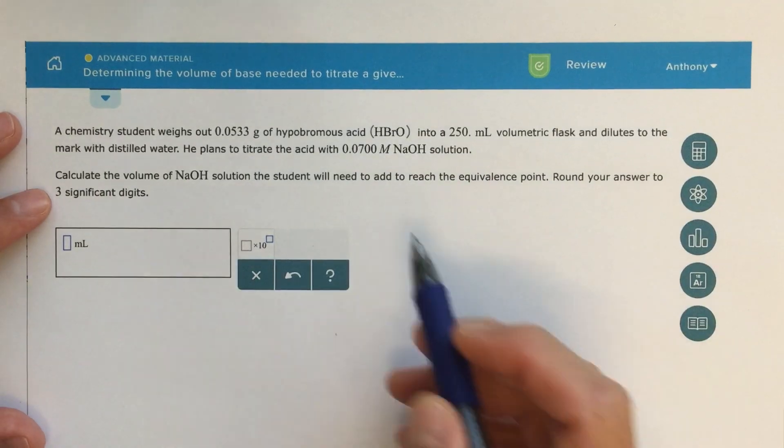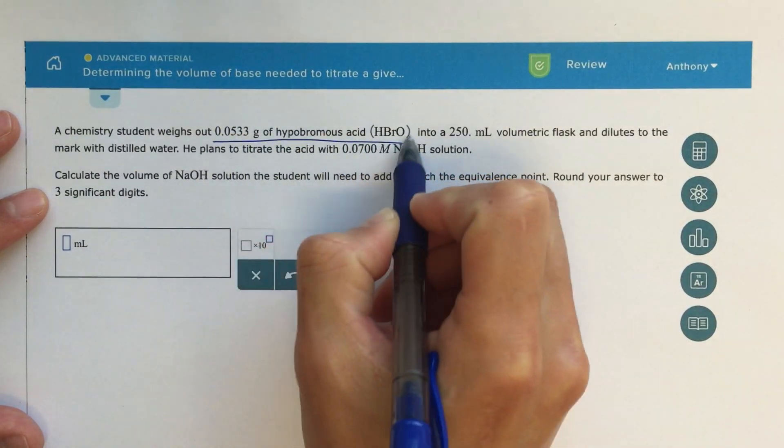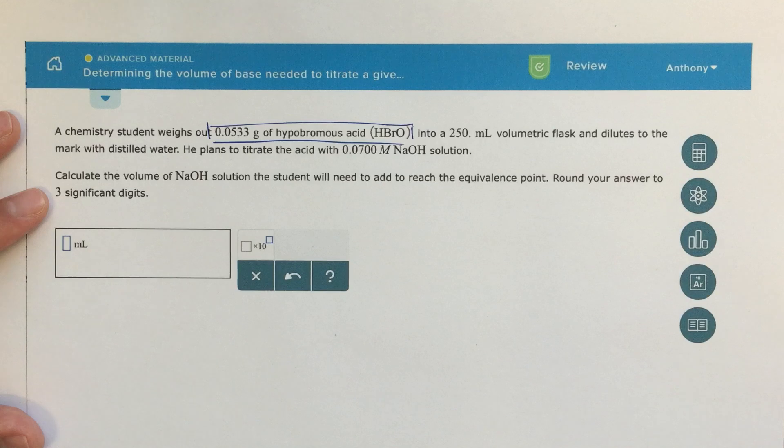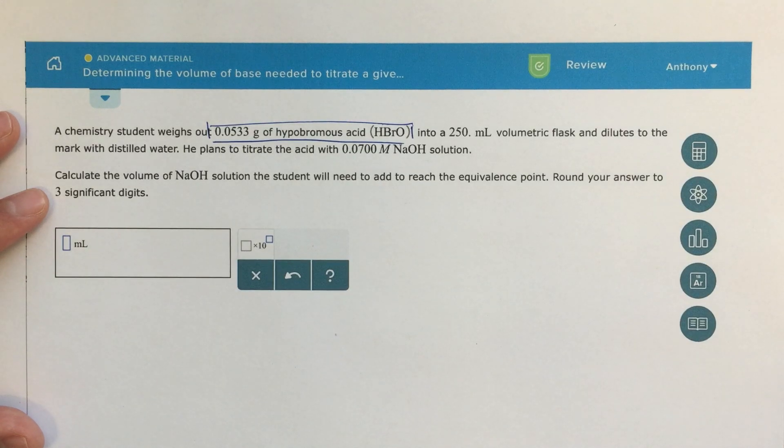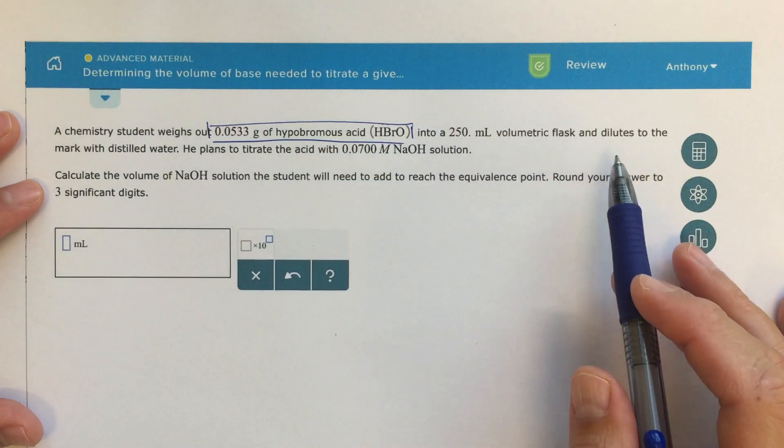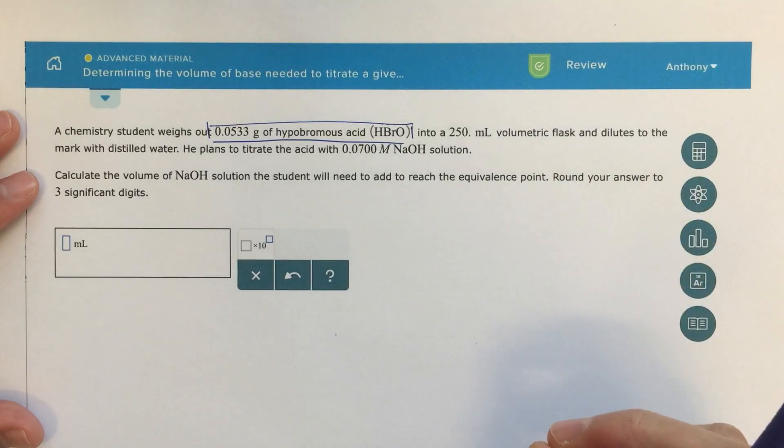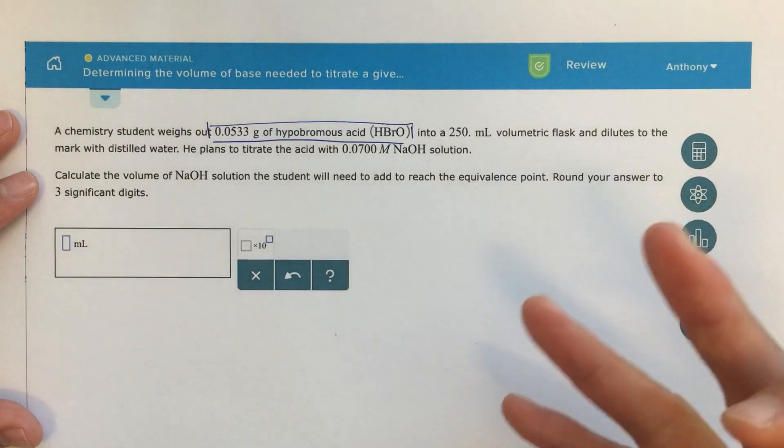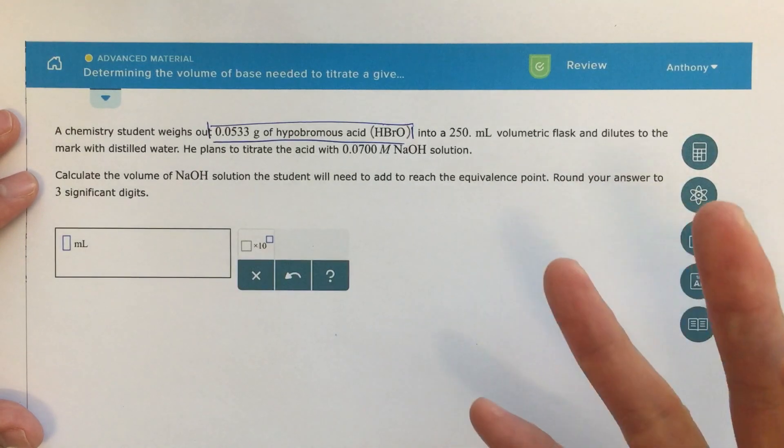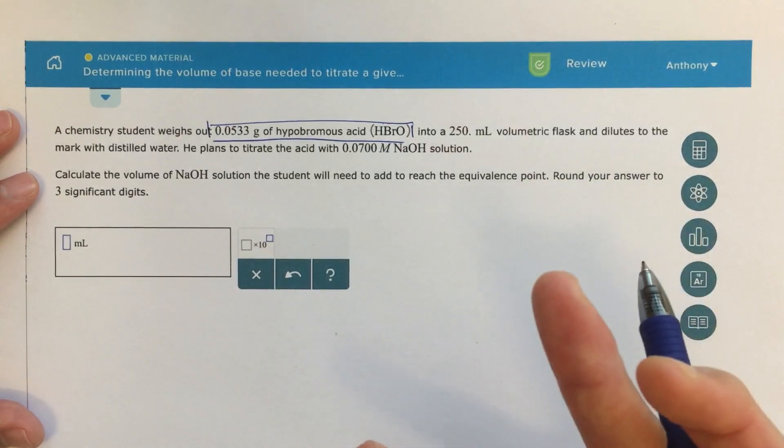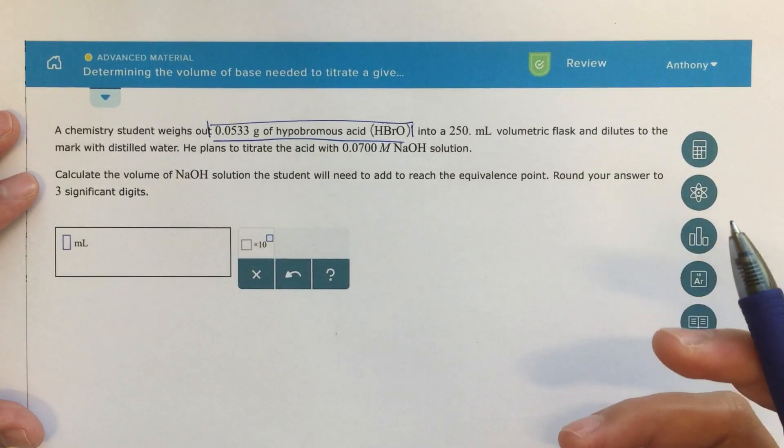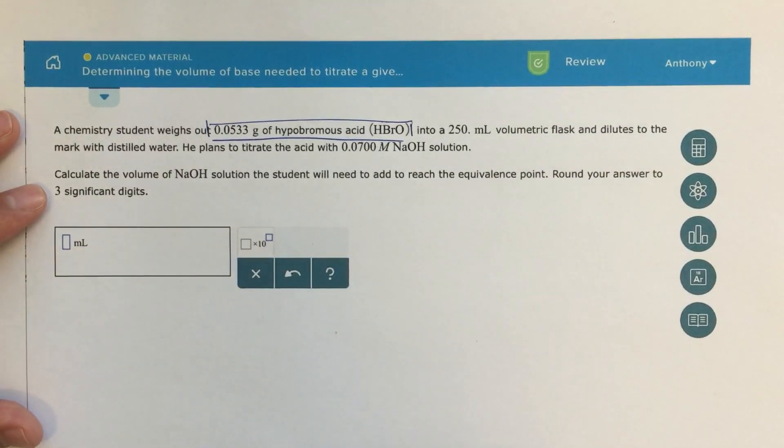The given mass of acid in this case is 0.0533 grams of hydrobromous acid, HBRO, into a 250 milliliter volumetric flask, and then diluting to the mark with distilled water. This bit of information here about the 250 milliliter volumetric flask is really extraneous information. We don't really need it to solve this problem, and sometimes we're going to see stuff like this where it's in there not necessarily to trick you, but you might think it is a little tricky. In this case it's not necessary, and we'll talk about that as we solve the problem.